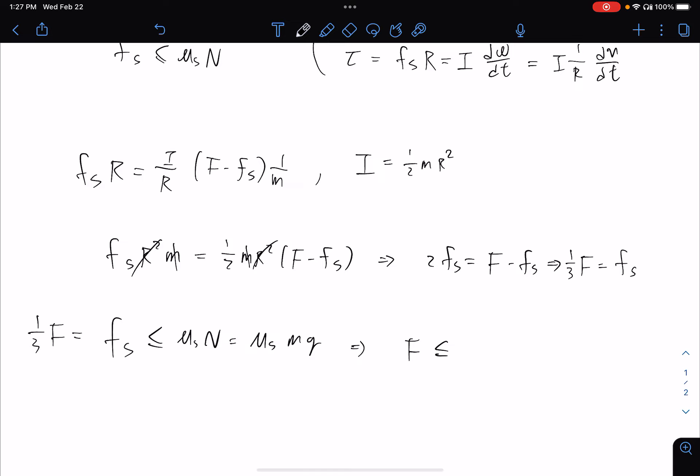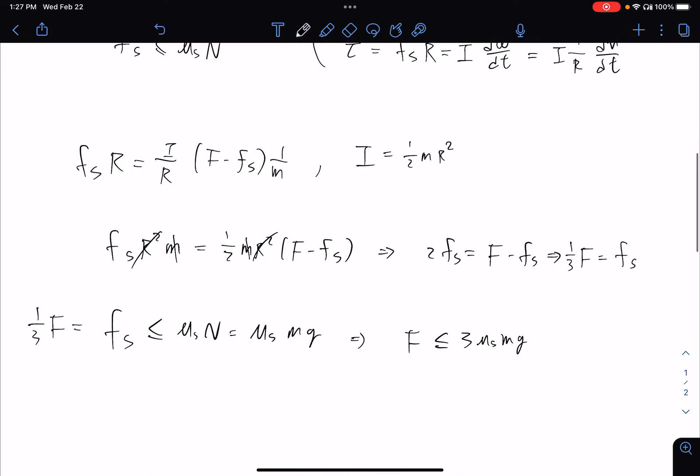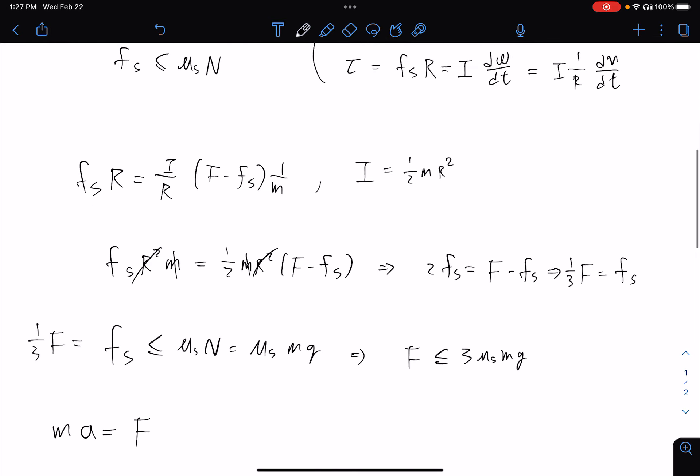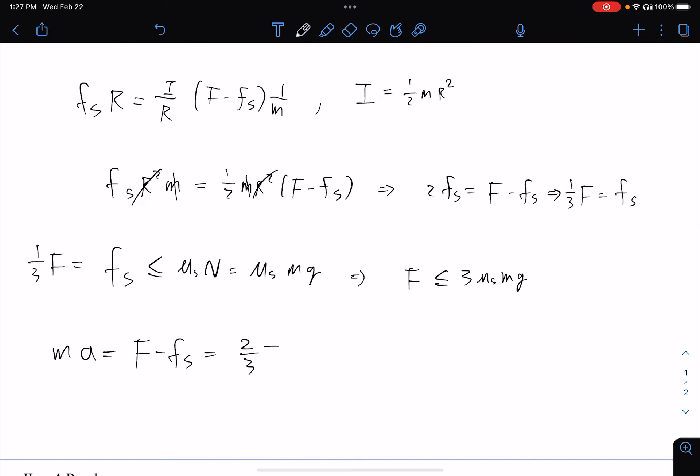Now the acceleration is determined by F minus fₛ. ma equals F minus fₛ. fₛ is just one third of F so it will be 2/3 F, and it should be smaller or equal to 3μₛmg. So 3μₛmg.